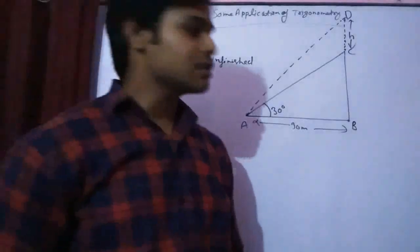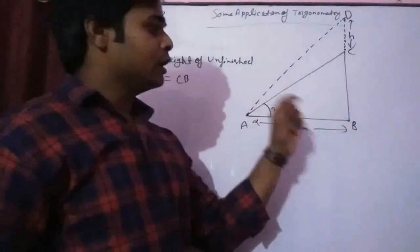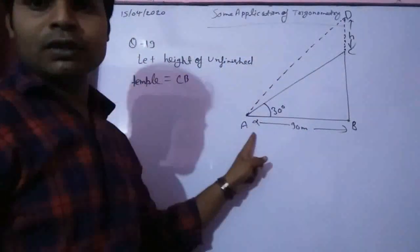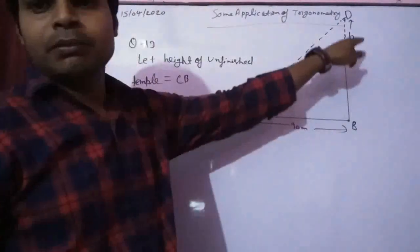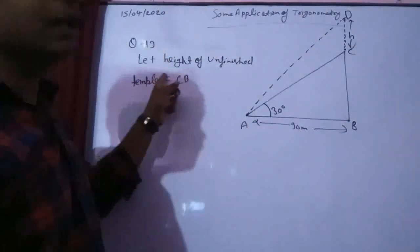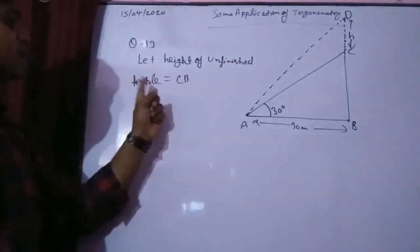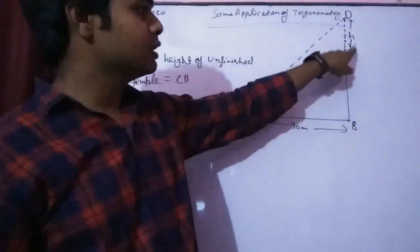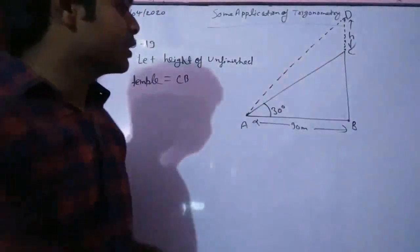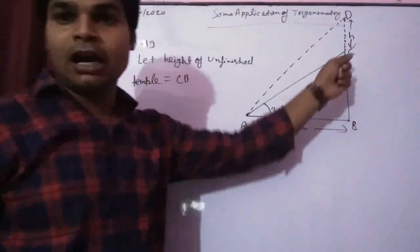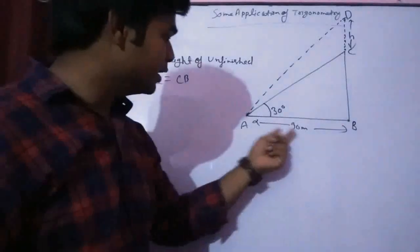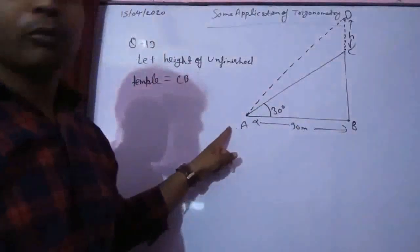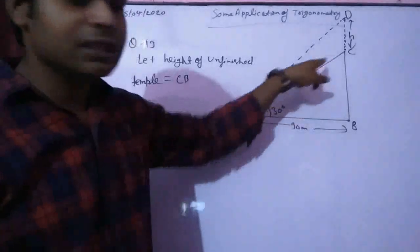Let's understand the question. From a point 30 meters away at an unfinished temple, let the height of unfinished temple equals to BC. So BC is the height of the temple. It is an unfinished temple and 30 meters away from a point, the angle of elevation is 30 degrees.